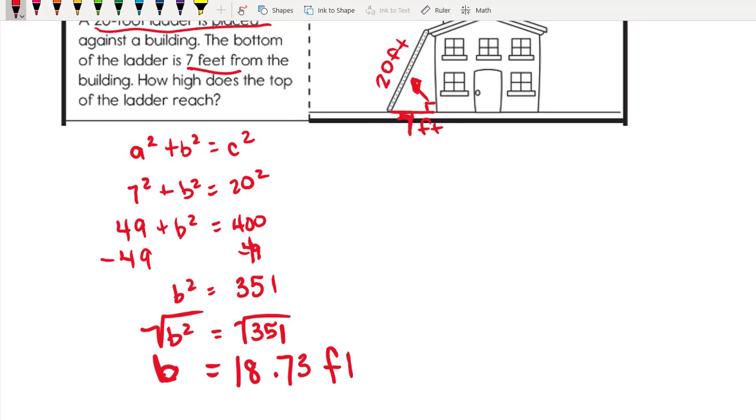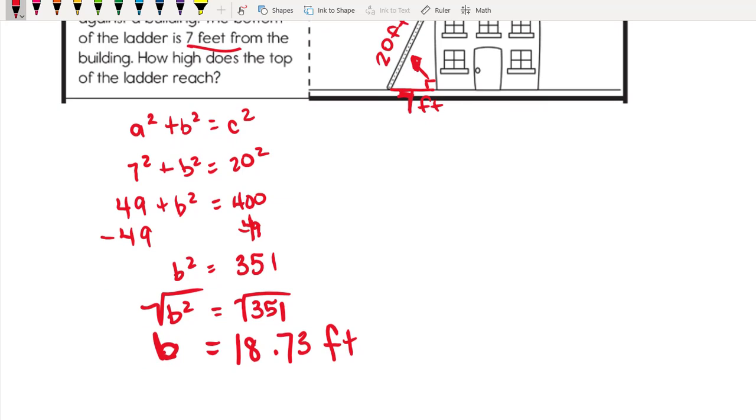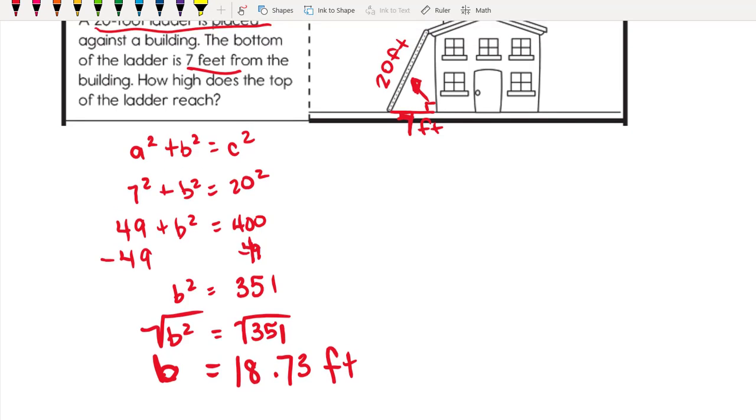B is approximately 18.73 feet. That means if you have a 20-foot ladder, you cannot reach 20 feet high on a building. You're going to be reaching lower than that, so that makes sense. The 18 feet approximately goes here for that leg.